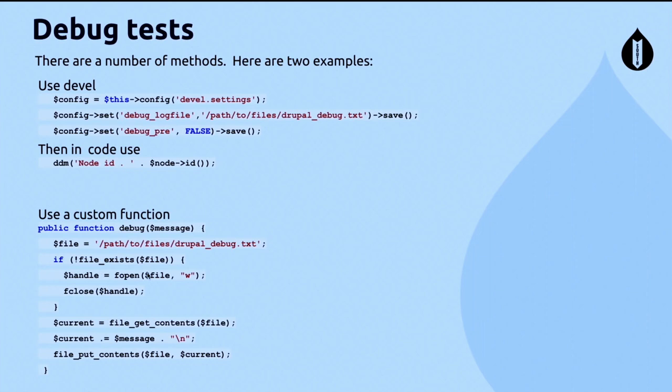When running a test, there's no log output unless you create one. Here are a couple of options: one uses the Devel module. In both cases, you include the code in your test base class and put the debug output in your test script.